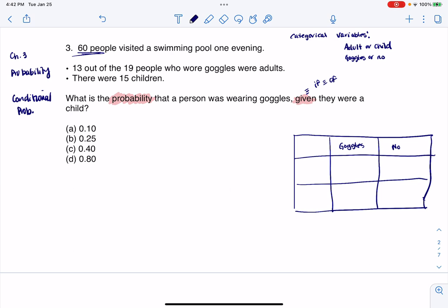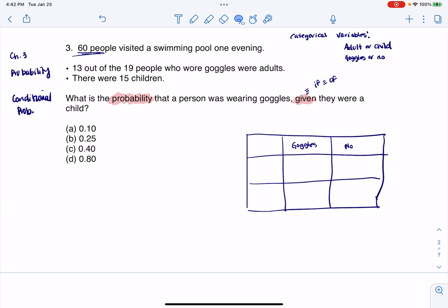And this will say 'no goggles'. Actually, I'm gonna scoot this a little to the left because I think I'll want a total column. Then I'm gonna have adult versus child. I do think I want the totals - I'm eventually gonna use those. Let me extend this table. This is why I didn't know exactly how many cells I would need.